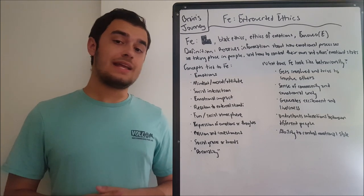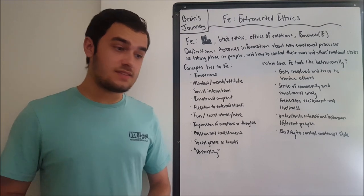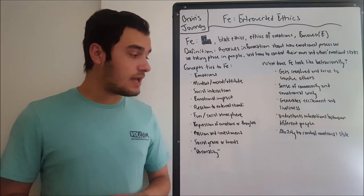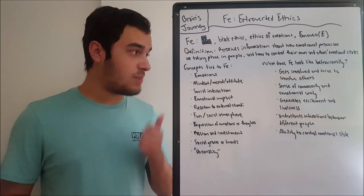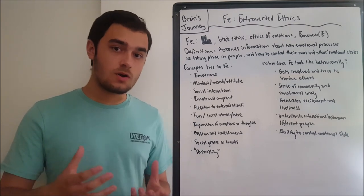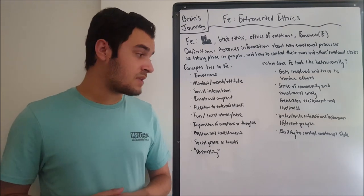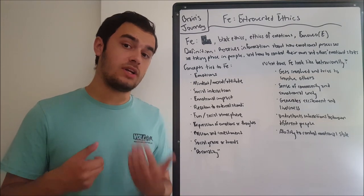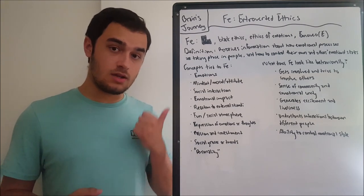The third concept is social interaction, because all social interaction, in a very simplified sense, is the exchange of emotional processes, the exchange of thoughts and ideas, and the expression of different emotive states. FE is very involved, especially behaviorally, with social interaction, because it's a center for how the FE user expresses themselves in their circle, and also a way to gain information about the processes going on in its immediate environment.